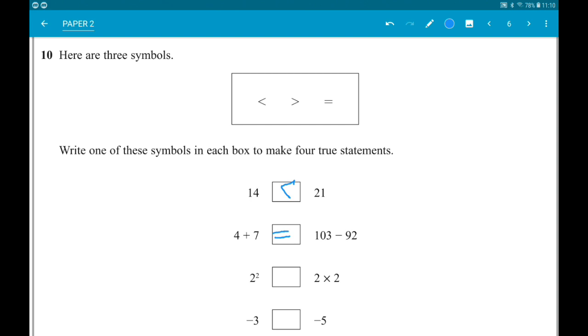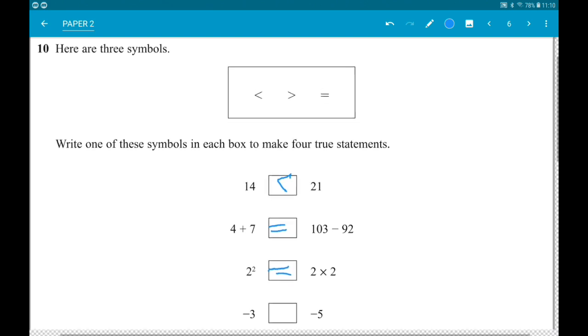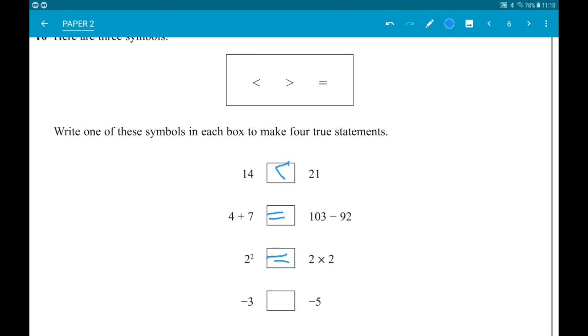Then we have two squared, which means two times two, box two times two. That again wants an equals. Finally, we have minus three box minus five. Minus three is bigger than minus five, so it's an arrow pointing right.